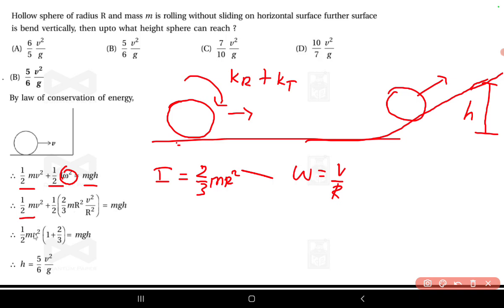If you solve this you'll get ½mv² here. It will become 2 and 2 will cancel, so here it becomes (1 + ⅔) equals mgh, because ½mv² is common in all the terms.